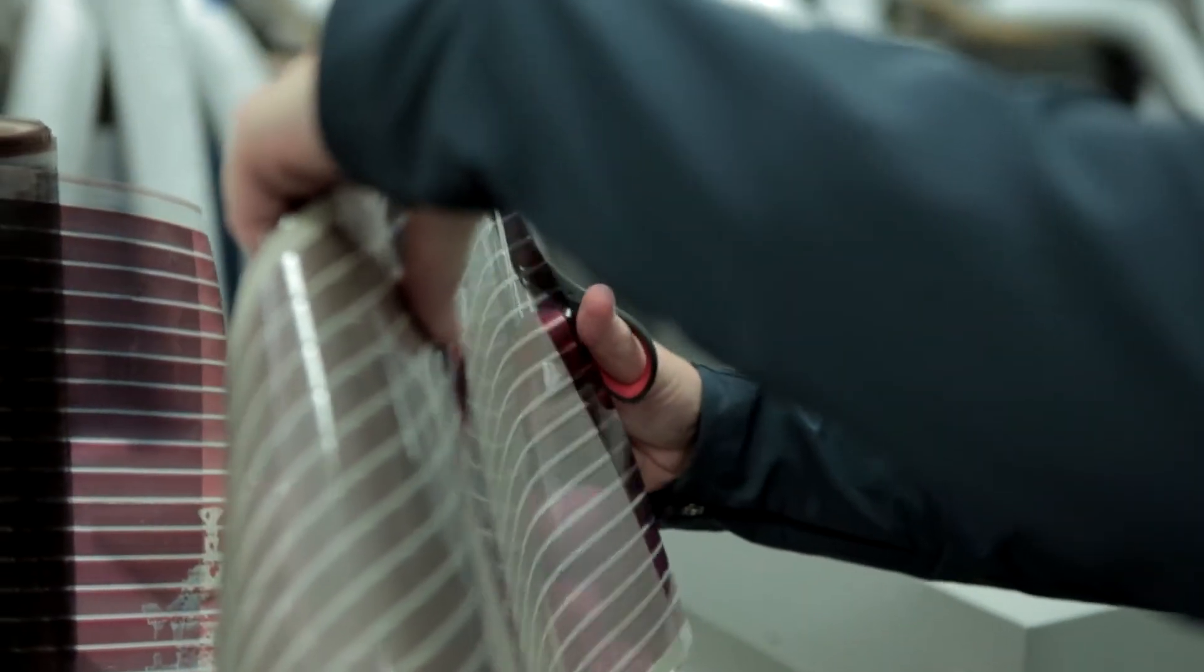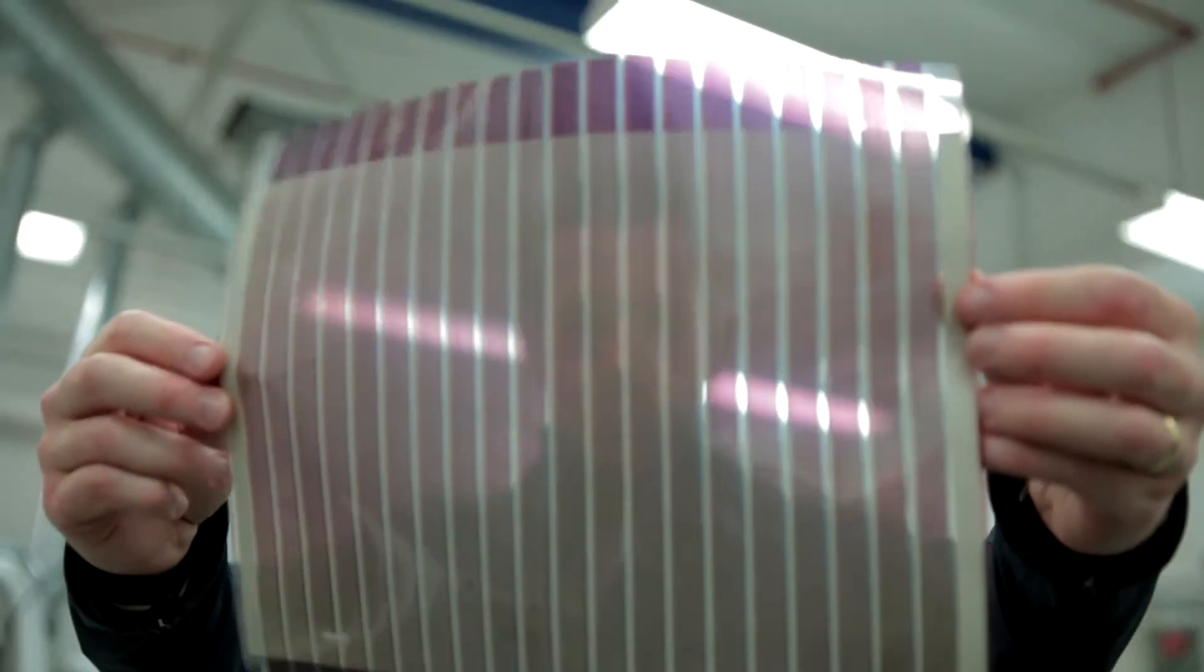And the product that we get out of the end is flexible, lightweight, and can be different shapes and colors. All of this means that we can use solar power in ways that are different to what we can currently do with existing hard rigid silicon solar panels.